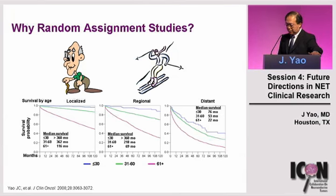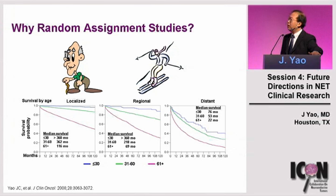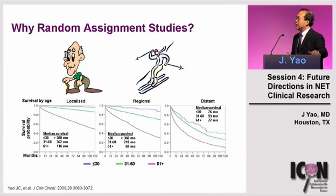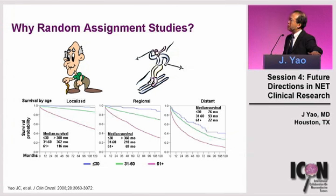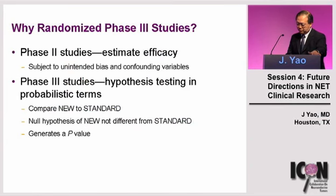Other reasons we need randomized trials include unintended biases. We tend to treat younger, healthier patients more aggressively, while offering only standard care to a frail 80-year-old. But then we cannot interpret trial results against a large database like the SEER database, because a younger patient — simply by virtue of age — will have a much better outcome, with median survival of 76 months versus 22 months for an older patient.